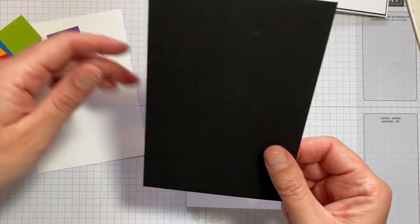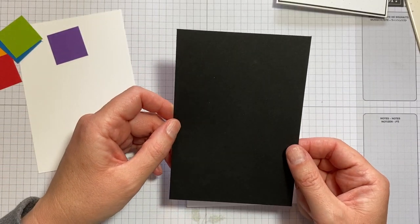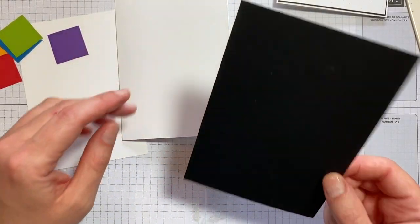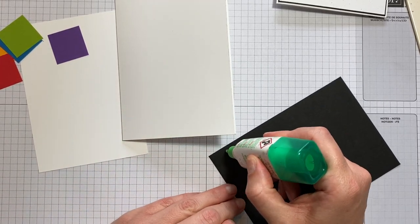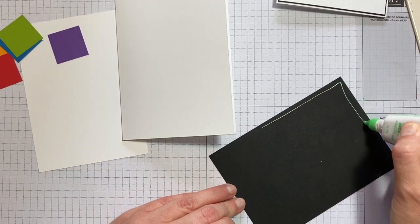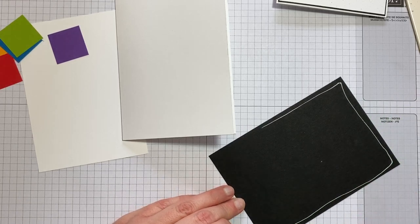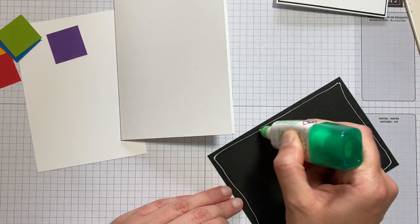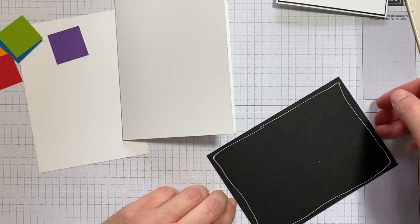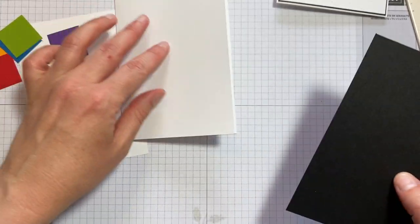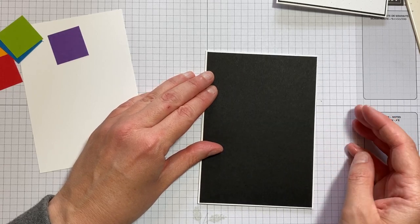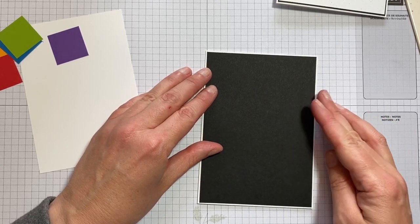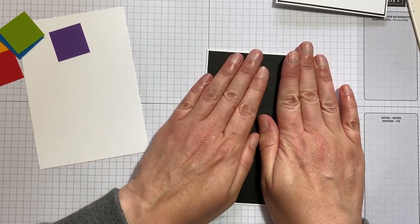Next, I've got a layer of basic black cardstock which we can pop straight on to the card base. A little bit of multi-purpose liquid glue and pop that on there.